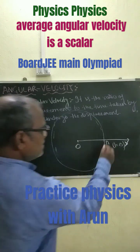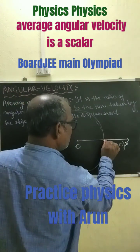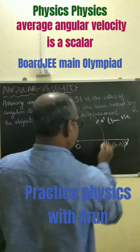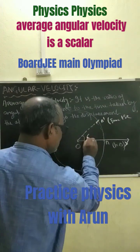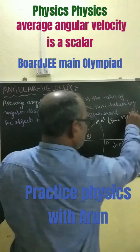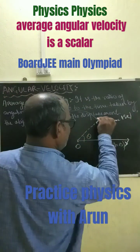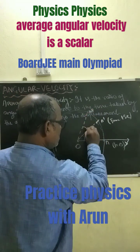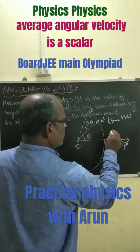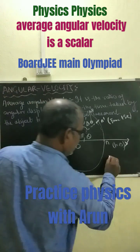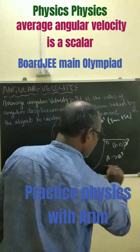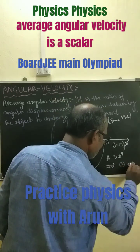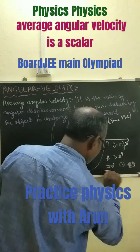Then at a certain time, when this particle moves to position A dash at time t seconds, making an angle theta. After a delta-t time, let it move to position A double dash, making a small angle delta-theta. From A to A double dash, the particle has moved an angular displacement of theta plus delta-theta at time t.